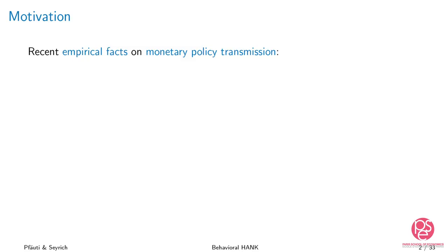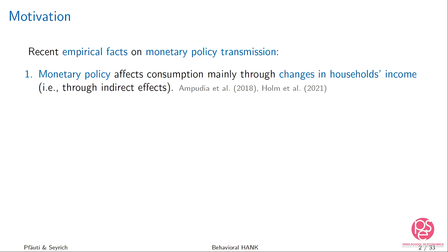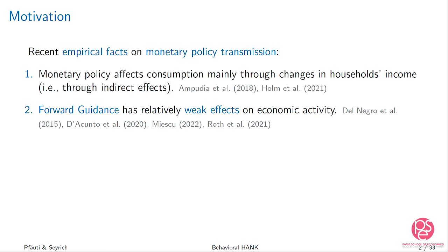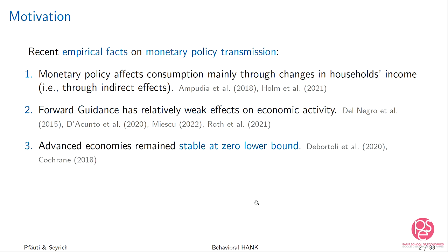There is more and more evidence that monetary policy affects household consumption mainly through changing people's incomes — so-called indirect general equilibrium effects — whereas direct effects through changes in the interest rate and intertemporal substitution channels are probably less important. These indirect effects tend to amplify the effectiveness of conventional monetary policies. Announcements of future monetary policy actions — forward guidance — on the other hand, seem to have relatively weak effects in stimulating current economic activity.